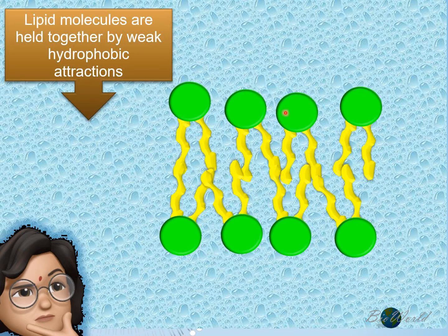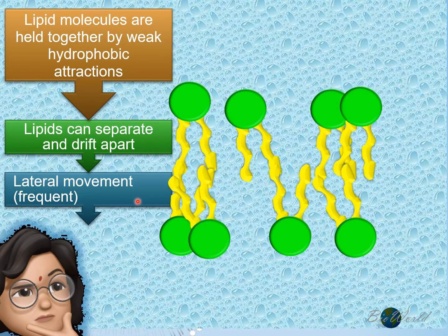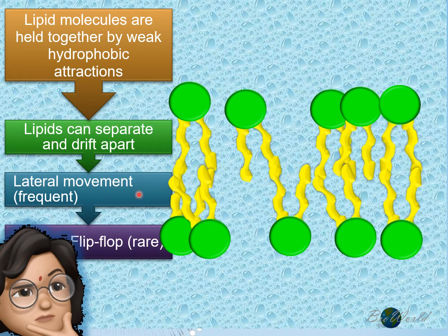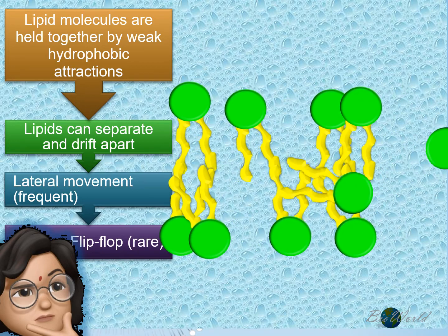However, this arrangement is not a permanent or fixed position since there are no strong bonds between the molecules. Instead, they are arranged in this manner due to weak hydrophobic attractions. Since these attractions are weak, the molecules can easily separate and drift apart. They can drift apart using two methods. The most frequent method is called lateral movement, where the molecules move from left to right. Another more rare movement is known as the flip-flop movement, where molecules from the upper surface exchange position with molecules from the lower surface. So you can see that these molecules are dynamic, constantly moving. This movement is not limited to the phospholipids — even the proteins can be fluid.